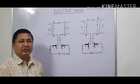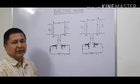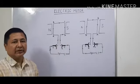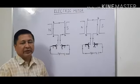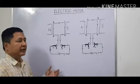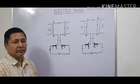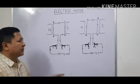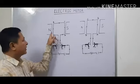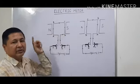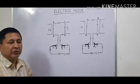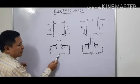Now we will discuss the working of the electric motor. The principle of the electric motor is that whenever a current-carrying conductor is placed in a magnetic field and current is passed, it experiences a force. The direction of this force is given by Fleming's left-hand rule. This force experienced on the current-carrying conductor when placed in a magnetic field is the basic principle of the electric motor.